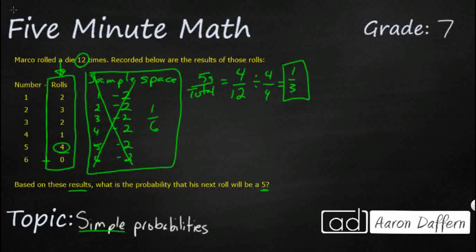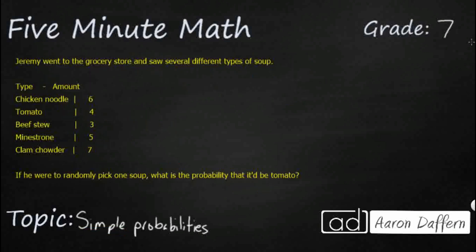Let's look at another example. This time we have Jeremy. He's going to the grocery store and he's going to see several different types of soups — we're not rolling a die this time. We've got chicken noodle, there's six of them; tomato; beef stew; minestrone; and clam chowder. If you were to randomly pick one soup, that's where we get our simple probability because we're just looking for one outcome, one soup out of all of these. What is the probability that it would be tomato?